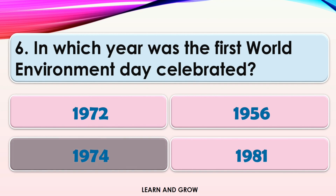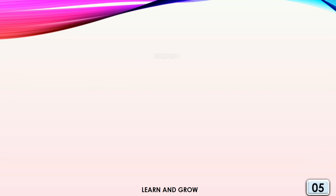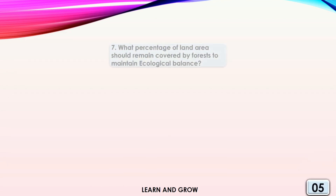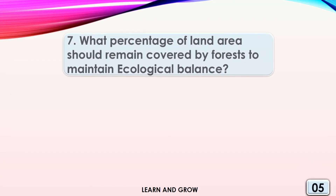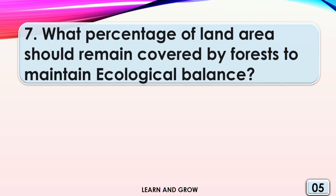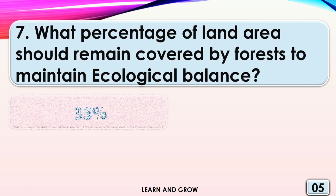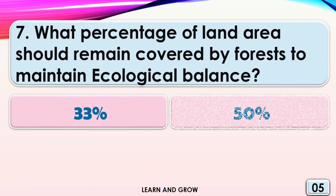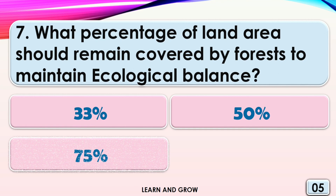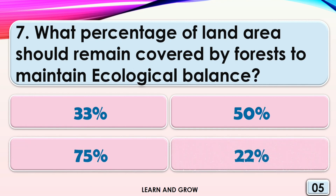The answer is 1974. What percentage of land area should remain covered by forest to maintain ecological balance? Option A, 33%; option B, 50%; option C, 75%; or option D, 22%?